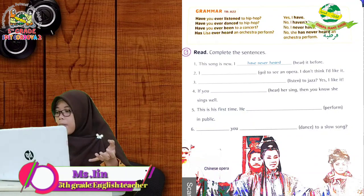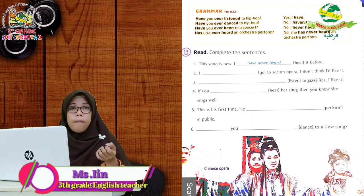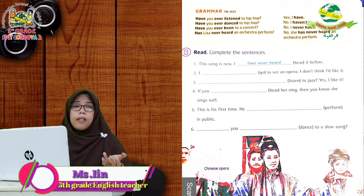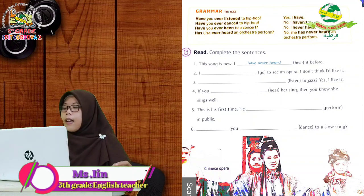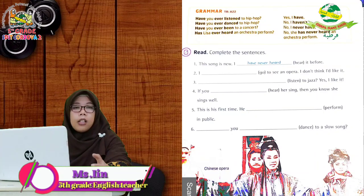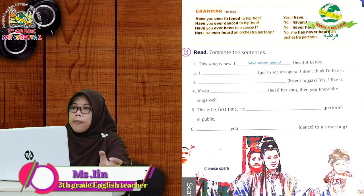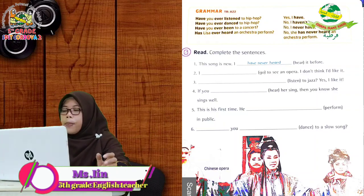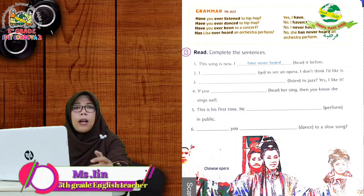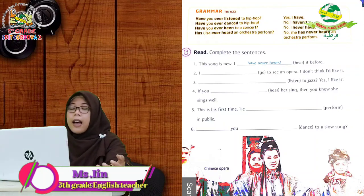Next example: 'Have you ever danced to hip-hop?' — Apakah kamu pernah menari hip-hop? Jika tidak, short answer: 'No, I haven't.' Complete answer: 'No, I haven't. I have never danced to hip-hop.' For never, the answer can be 'I haven't' or 'I never have.' Third example: 'Have you ever been to a concert?' — 'I never have. I never have been to a concert.'